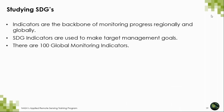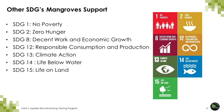These indicators, like 6.6.1, are the backbone of monitoring progress regionally and globally for the SDGs. The SDG indicators are also used to make target management goals, and globally there are 100 global monitoring indicators. Mangroves support a whole range of SDGs, not just SDG 6. For example, mangroves are also important for SDG 1 (no poverty), SDG 2 (zero hunger), SDG 8 (decent work and economic growth), SDG 12 (responsible consumption and production), SDG 13 (climate action), SDG 14 (life underwater), and SDG 15 (life on land).